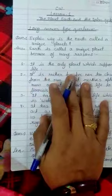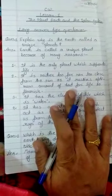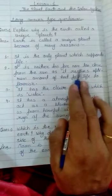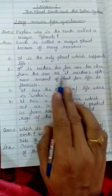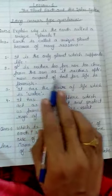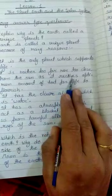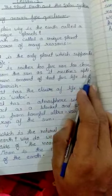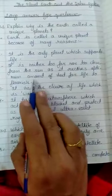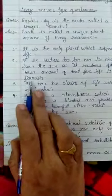Next point: It is neither too far nor too close from the sun as it receives optimum amount of heat for life to flourish. Receive ki spelling: R-E-C-E-I-V-E-S. Optimum: O-P-T-I-M-U-M. Amount: A-M-O-U-N-T. Flourish: F-L-O-U-R-I-S-H. Spelling pe bhoat dhyan dijiye ga bacho.